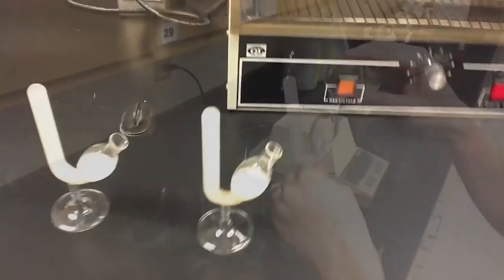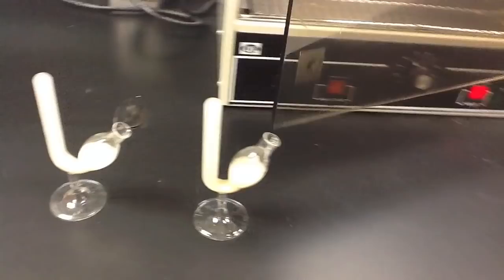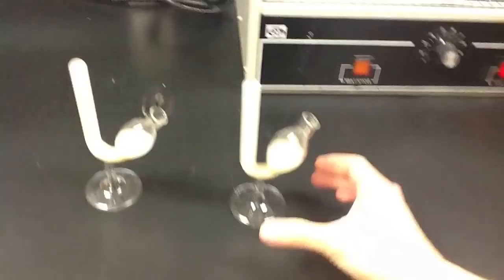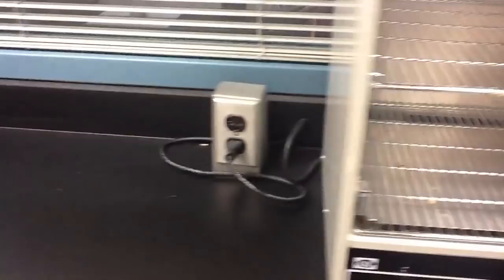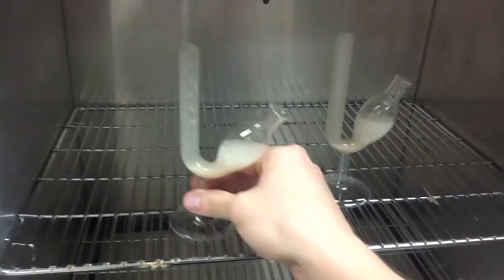After taking the initial reading for the amount of carbon dioxide produced in both solutions, we're now ready to place the fermentation tubes into the incubator. Simply place them on the rack, and we close the door, and we will now let them incubate for a total of 40 minutes, checking them at 10 minute time intervals.